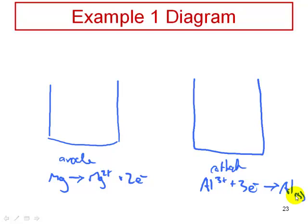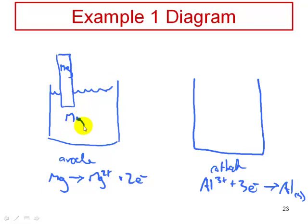In the anode compartment on the left, the electrode is made of magnesium metal. The electrolyte solution in this compartment contains Mg²⁺ ions — commonly written as magnesium nitrate or a similar compound containing magnesium ions and counter-ions. For a standard cell, this solution would be at one molar concentration.